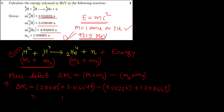Adding the reactant masses: 2.014102 + 3.016049 = 5.030151. Adding the product masses: 4.002603 + 1.008665 = 5.011268. Both sums have six decimal places, so we can now subtract to find the mass defect.